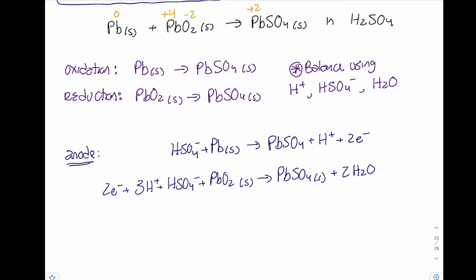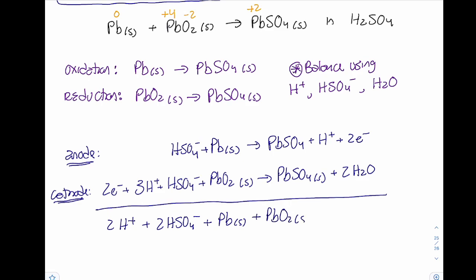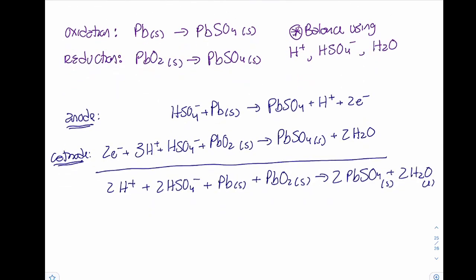Adding the two half-reactions together: the 2 electrons cancel. One proton cancels, leaving 2. Bisulfates combine. The overall net equation is: 2H⁺ + 2HSO₄⁻ + Pb(s) + PbO₂(s) → 2PbSO₄(s) + 2H₂O(l). The oxidation half-reaction occurs at the anode and the reduction half-reaction occurs at the cathode.